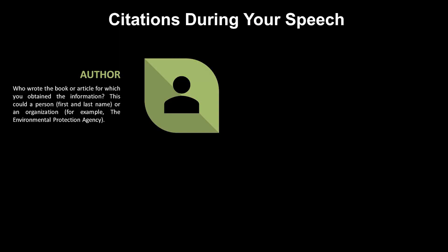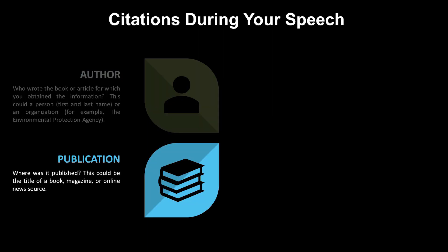The first piece of information you always want to include in a citation is the author. This could be a person or a corporate author like a government agency. It lets the audience know who wrote the material and where it came from.